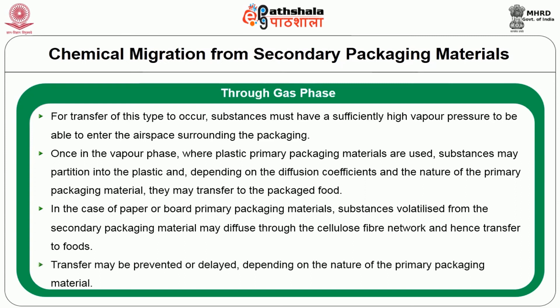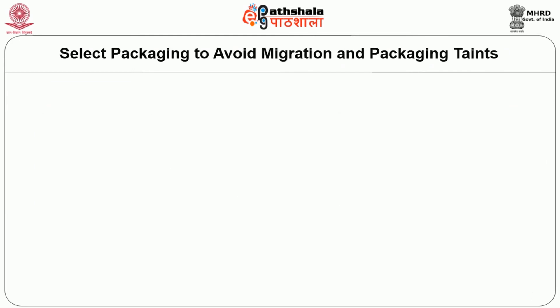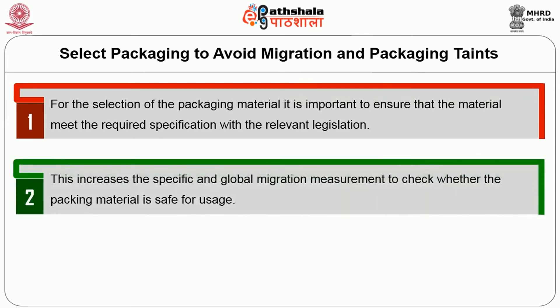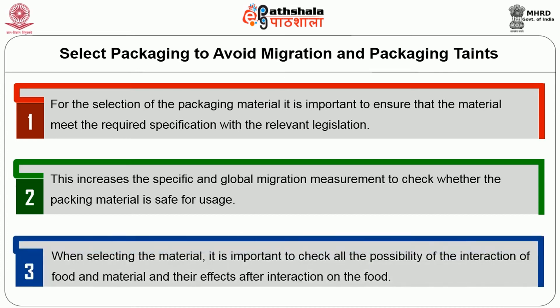Transfer may be prevented or delayed depending on the nature of the primary packaging material. Now we will move into the important part of this lecture: how to select the packaging to avoid migration and packaging taint. For the selection of packaging material, it is important to ensure that the material meets the required specification with the relevant legislations. This involves specific and global migration measurements to check whether the packaging material is safe for use. When selecting the material, it is important to check all possibilities of interaction of food and material and their effects.